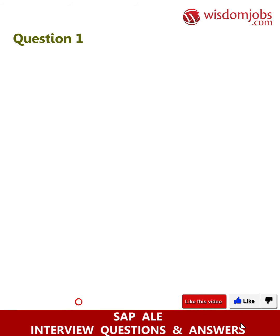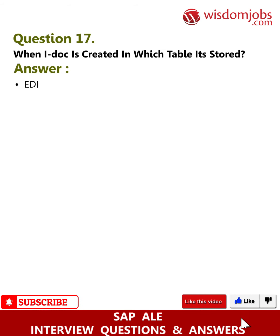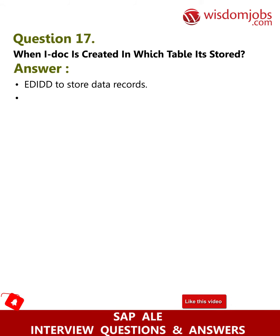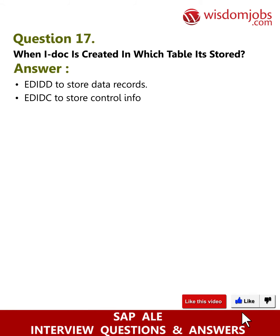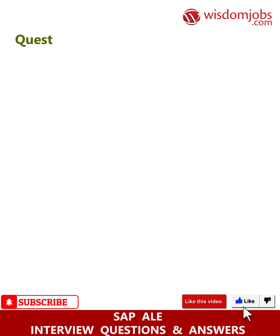Question 17: When an IDOC is created, in which table is it stored? Answer: EDIDD is used to store data records. EDIDC is used to store control information. EDIDS is used to store the status of the IDOC.